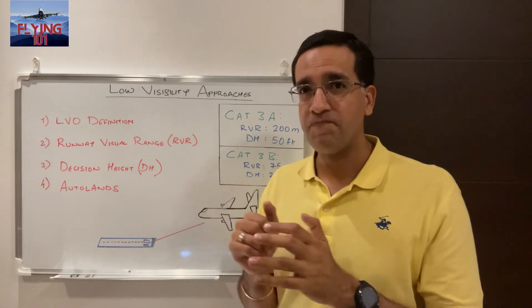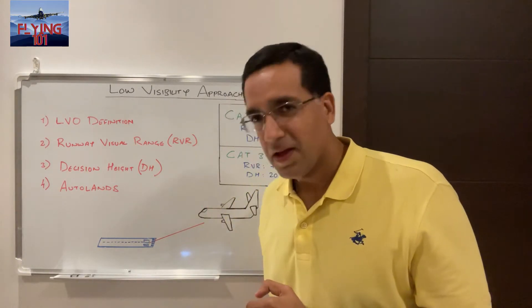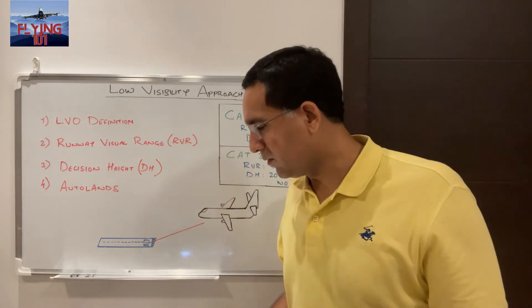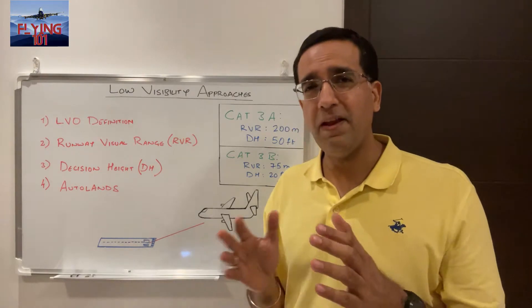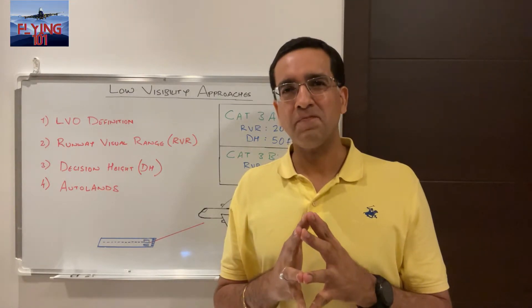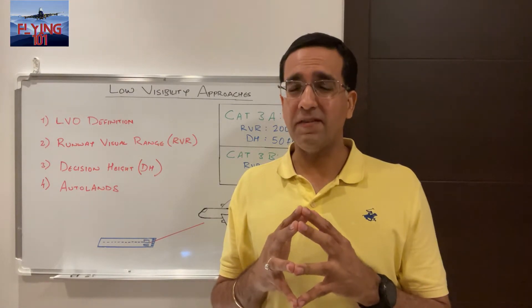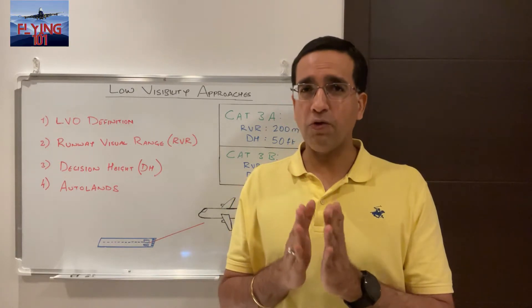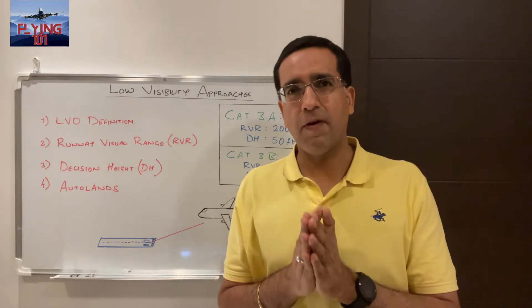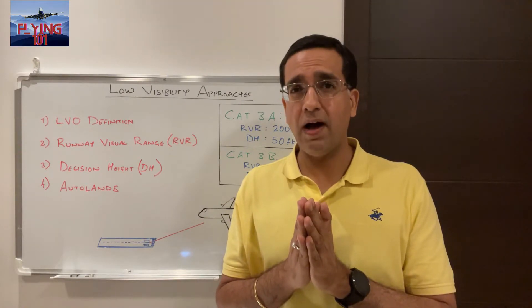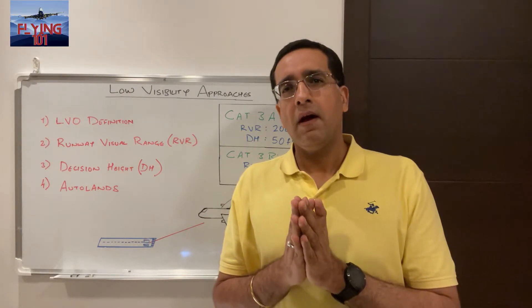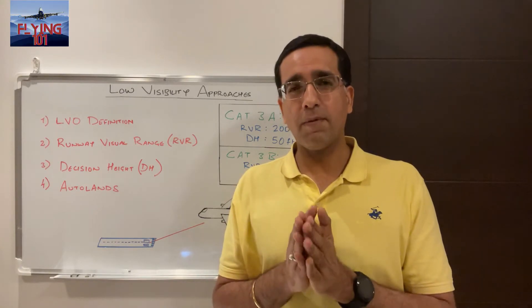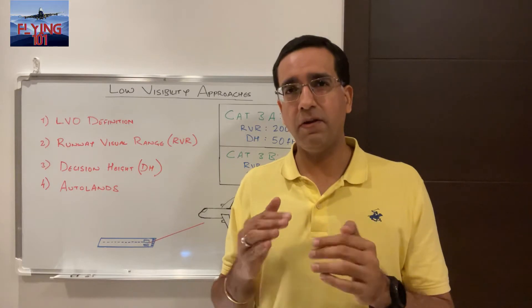Having talked about RVR, now let's explore the concept of decision height, or DH. Decision height is the aircraft wheel height above the runway elevation by which a go-around must be initiated, unless the required visual references have been established and the aircraft position and approach path have been assessed as satisfactory to continue the approach and the landing. In case you're wondering, a go-around is simply a normal procedure where an approach is discontinued and the aircraft goes back into a climb to follow a go-around procedure.